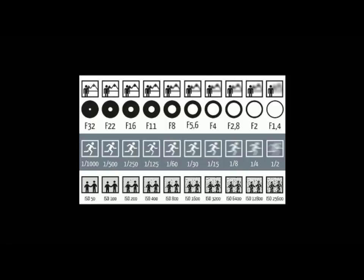The middle row here represents shutter speed. Shutter speed stops subject motion, and it also helps stop camera shake if you're not using a tripod. My next purchase is a tripod. I'll give you a little tip before we sign off.